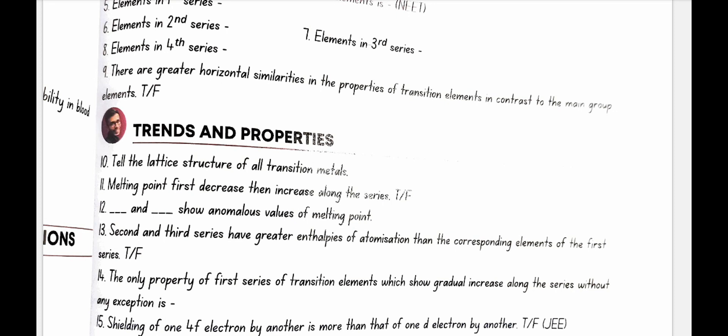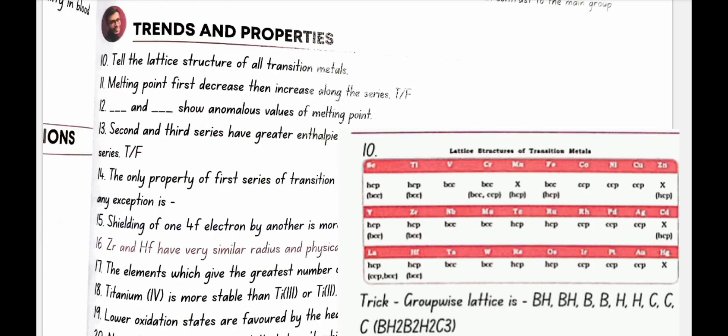Trends in properties. Tell the lattice structure of all the transition elements. So here there is a table given in NCERT which shows the lattice structures of transition metals. I'm displaying the table over here and there is a trick for this table. If we see group wise,